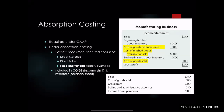Absorption costing is required under GAAP. Thinking back to Accounting 1A, GAAP is the Generally Accepted Accounting Principles — it's essentially an even playing field so that every publicly traded company is following the same rules and regulations. Under absorption costing, the cost of goods manufactured consists of direct materials, direct labor, and fixed and variable factory overhead.